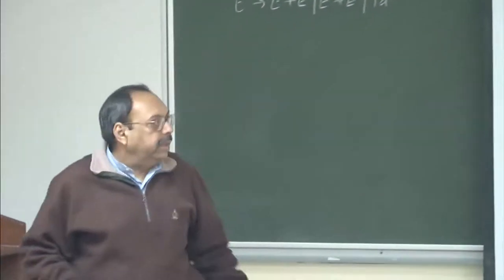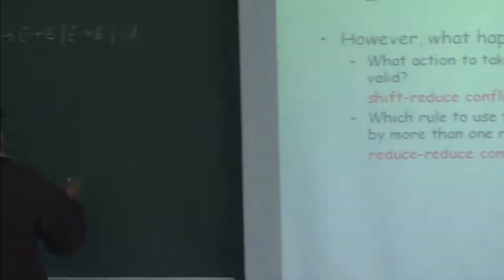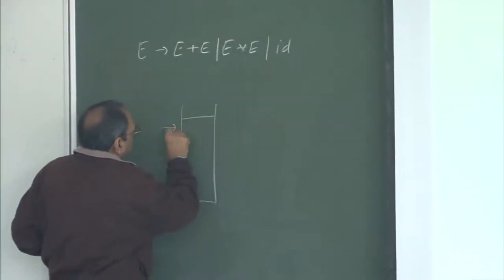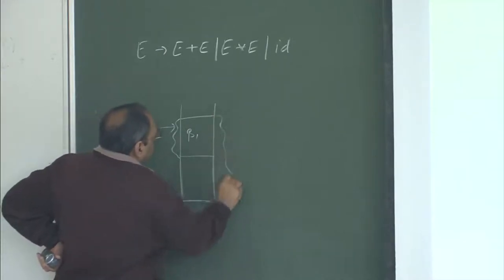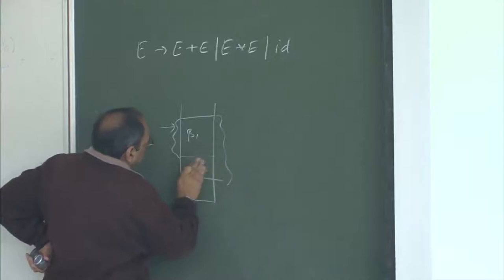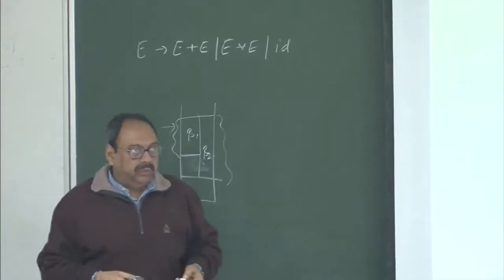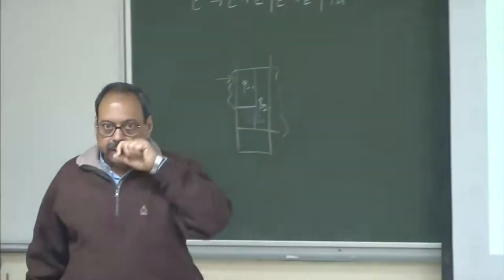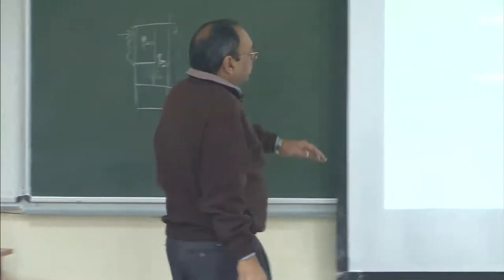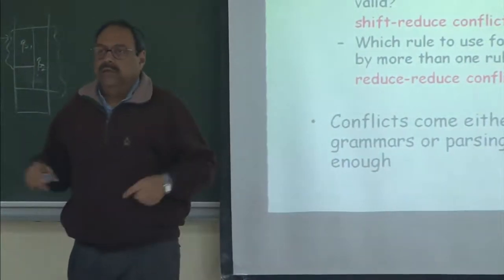Similarly, I can get into a reduce-reduce conflict, where given a stack I could find beta-1 matching one right-hand side or beta-2 matching another, and I cannot decide which rule to use for reduction. Normally we design grammars to avoid these conflicts. Such conflicts arise either because the grammar is not written properly or because the language does not fall into this class.